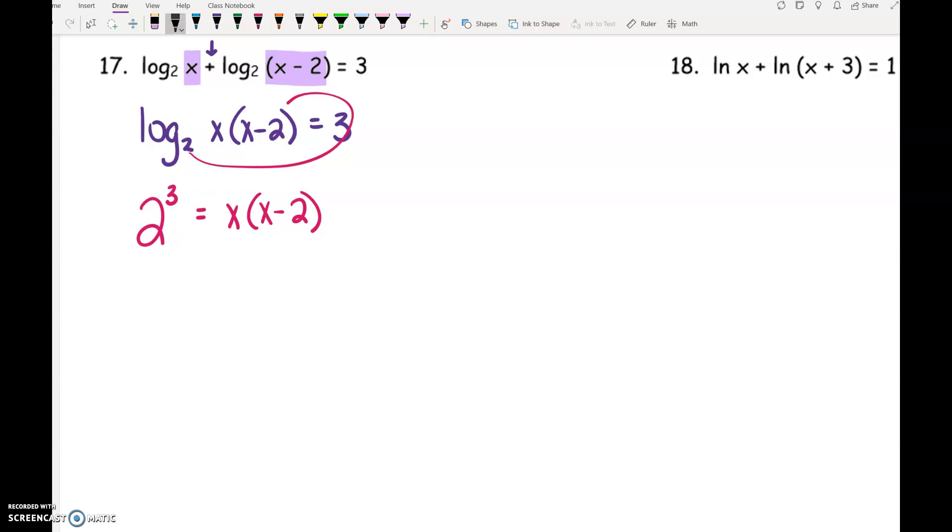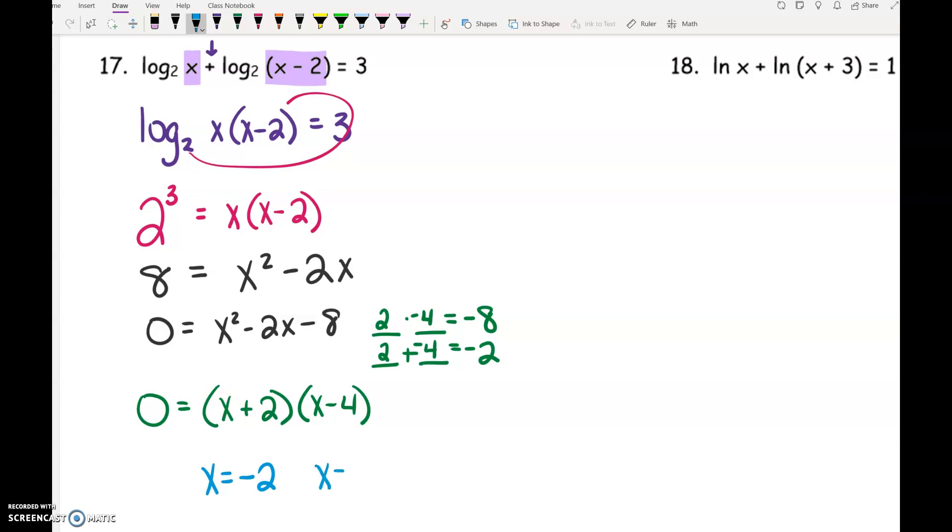So 2 to the 3rd equals x times x minus 2. 2 to the 3rd, I can do that in my calculator. 2 to the 3rd is 8. And then I'll distribute to get x squared minus 2x. Anytime you have x squared and x in the same equation, you need to get one side equal to 0. And then factor and solve. So we're looking for two numbers that multiply to give us negative 8 and add up to negative 2. So my factored form is x plus 2, x minus 4, which means our solutions are negative 2 and positive 4.